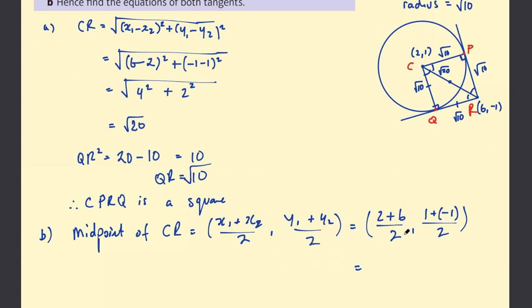(2+6) is 8 divided by 2 is 4. (1-1) is 0 divided by 2 is 0. So we have the midpoint of CR. That's also the midpoint of QP.